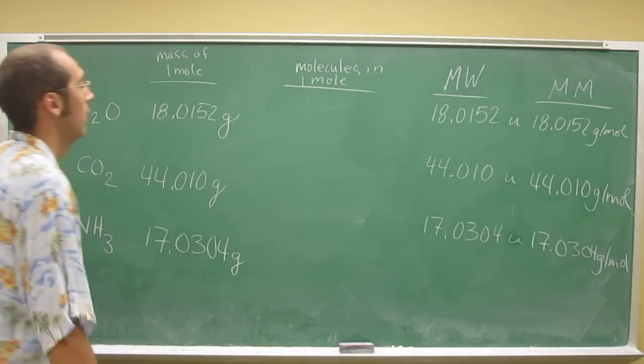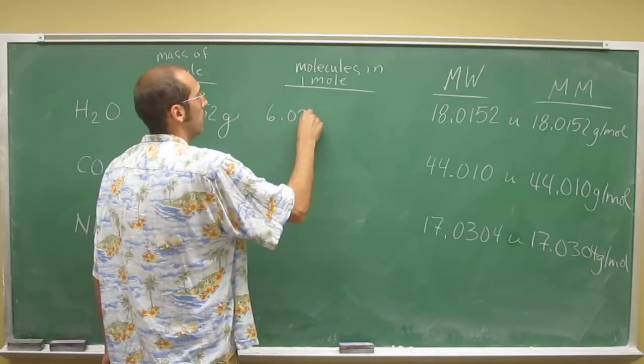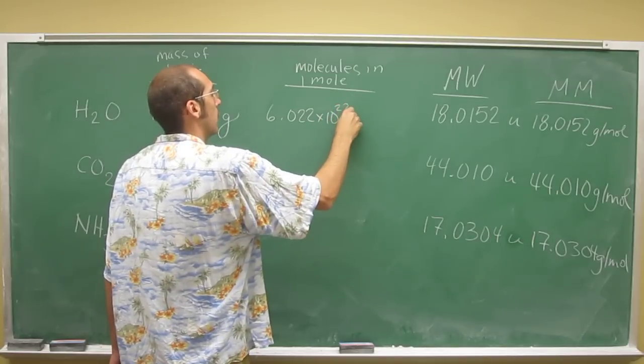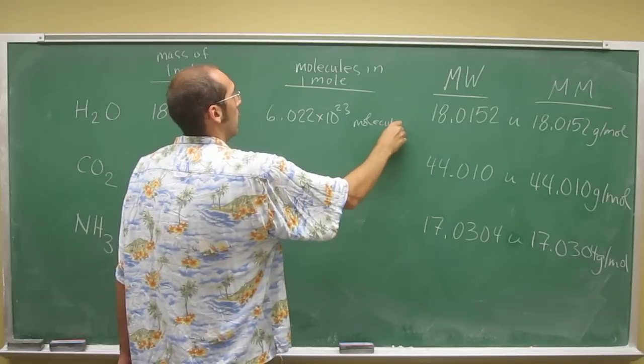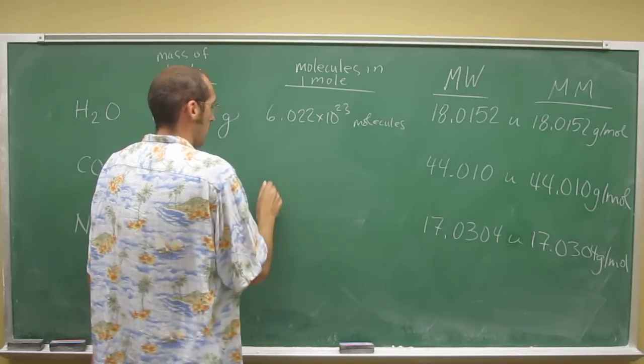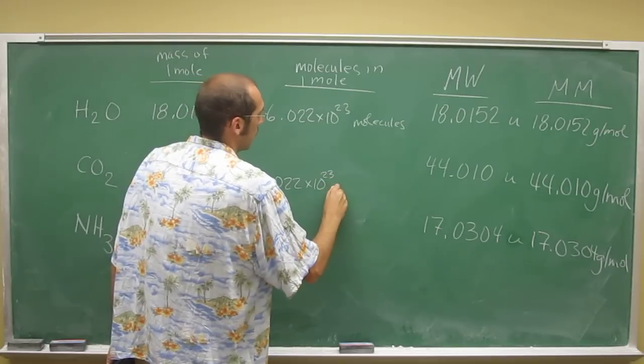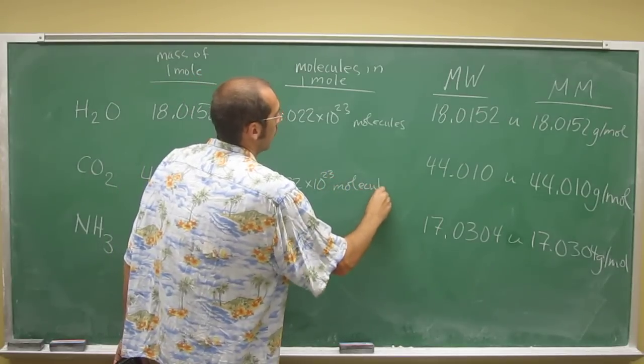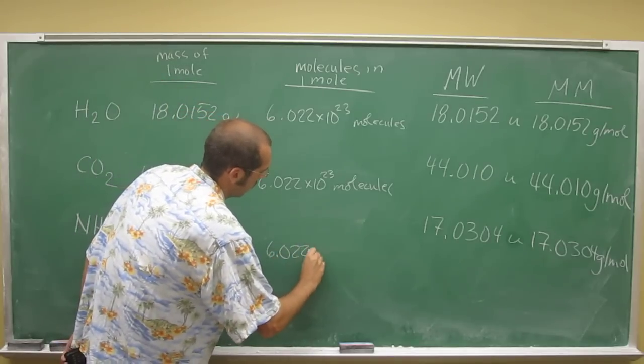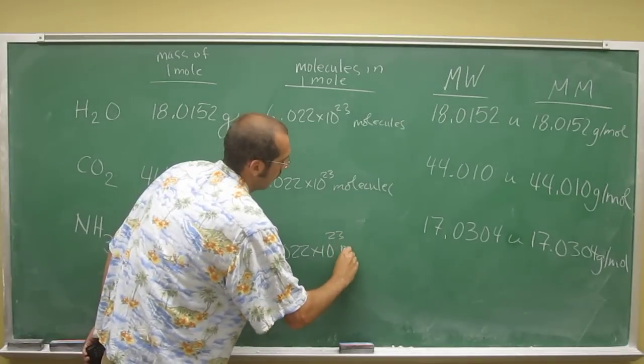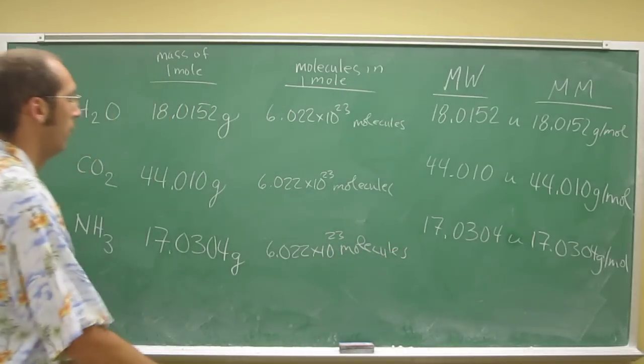And then the number of molecules in one mole, well of course that's going to be Avogadro's number. 6.022 times 10 to the 23rd molecules of water, 6.022 times 10 to the 23rd molecules of carbon dioxide, and 6.022 times 10 to the 23rd molecules of ammonia.